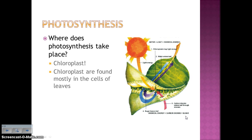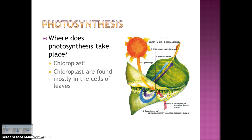Photosynthesis takes place in the chloroplast in eukaryotic cells. Chloroplasts are found mostly in the cells of leaves, which makes sense because leaves are designed for trapping light — they have broad leaves made for capturing sunlight. That's where you'll find most of the chloroplasts, and within each of those plant cells, you've got tons of chloroplasts.